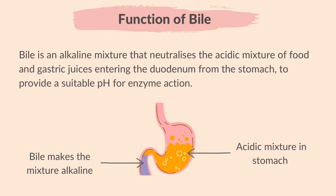Now let's look at the function of bile in chemical digestion. We already came across the role of bile in physical digestion in the previous video, which is to emulsify fats. Bile is an alkaline mixture that neutralizes the acidic mixture of food and gastric juices entering the duodenum from the stomach, to provide a suitable pH for enzyme action. The enzymes in the small intestine have a higher, more alkaline optimum pH than those in the stomach, so bile gives the food mixture a more suitable pH for those enzymes to work best in the small intestine.